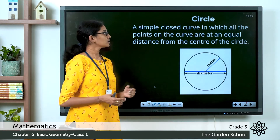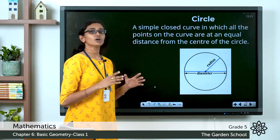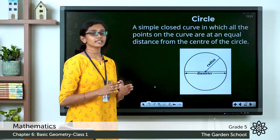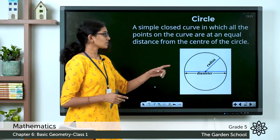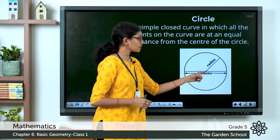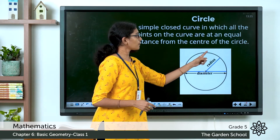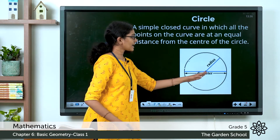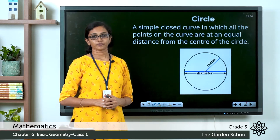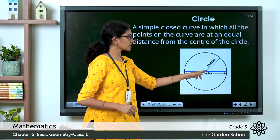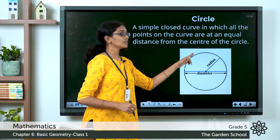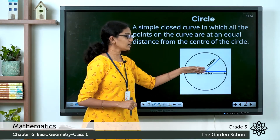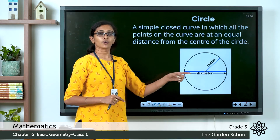What do you mean by a circle? A circle can be defined as a simple closed curve in which all the points on the circle are at the same exact distance from the center. You can see the center point marked here. All the points on the circle are at the same distance from the center, and this distance from the center to any point on the circle is called the radius of the circle.